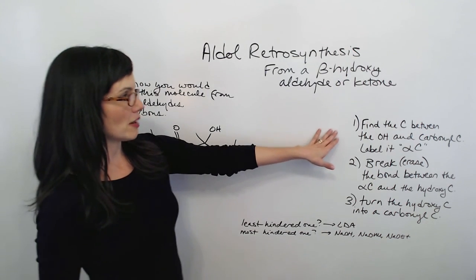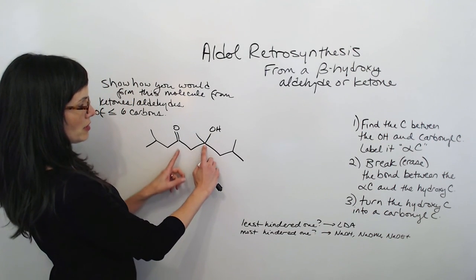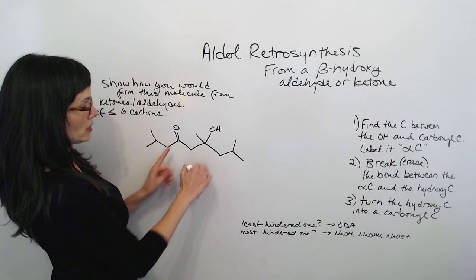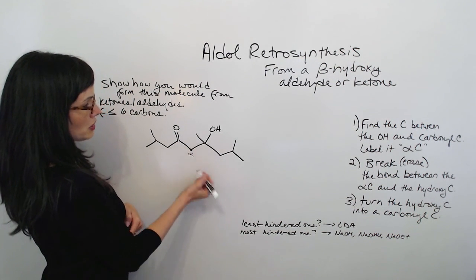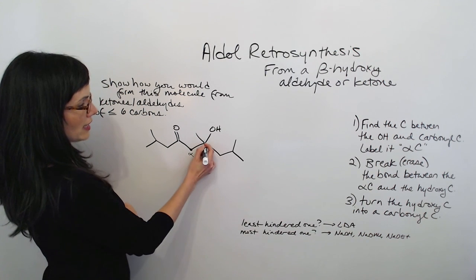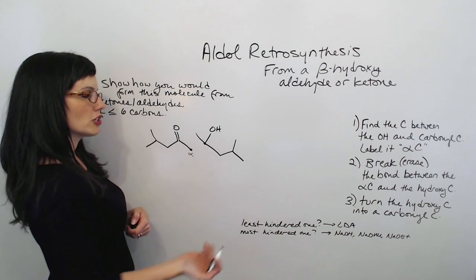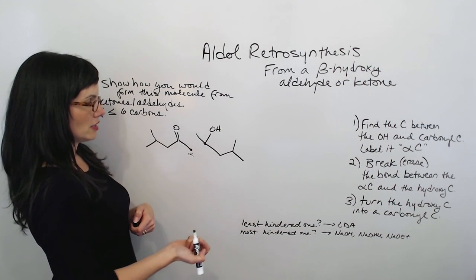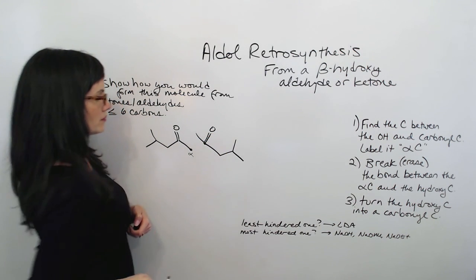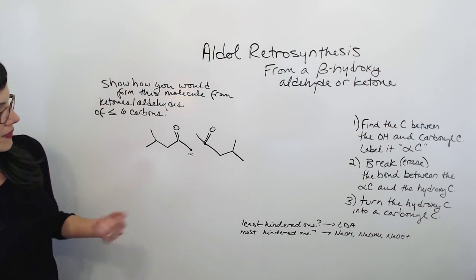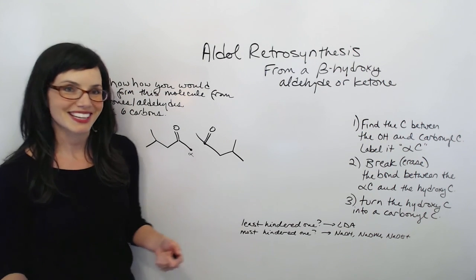We want to find the carbon between the hydroxy carbon and the carbonyl carbon — that's this one, so we know this is the alpha carbon. We're going to break the bond between the alpha carbon and the hydroxy carbon, and then turn that hydroxy carbon into a carbonyl. They look just the same, so we know we've got two identical molecules. That makes a lot of sense.